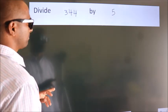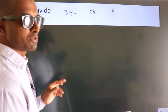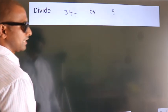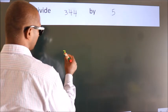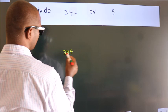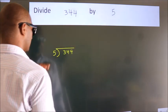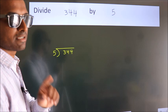Divide 344 by 5. To do this division, we should frame it in this way. 344 here, 5 here. This is your step 1.